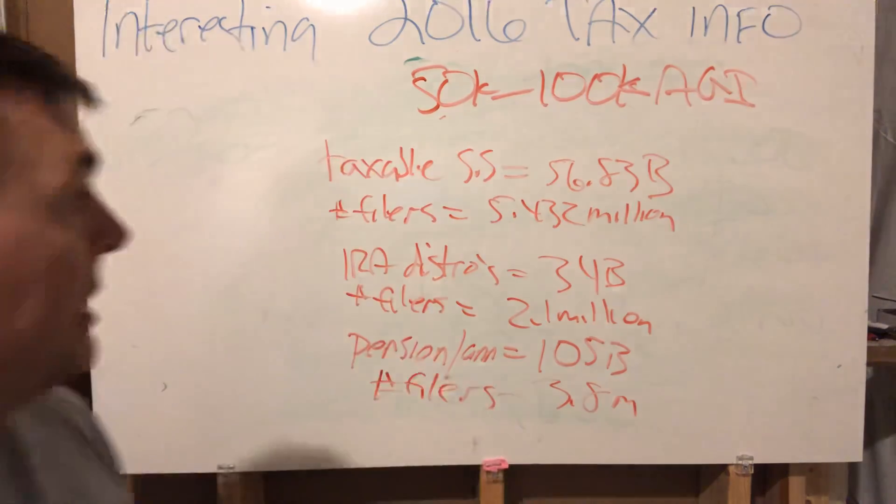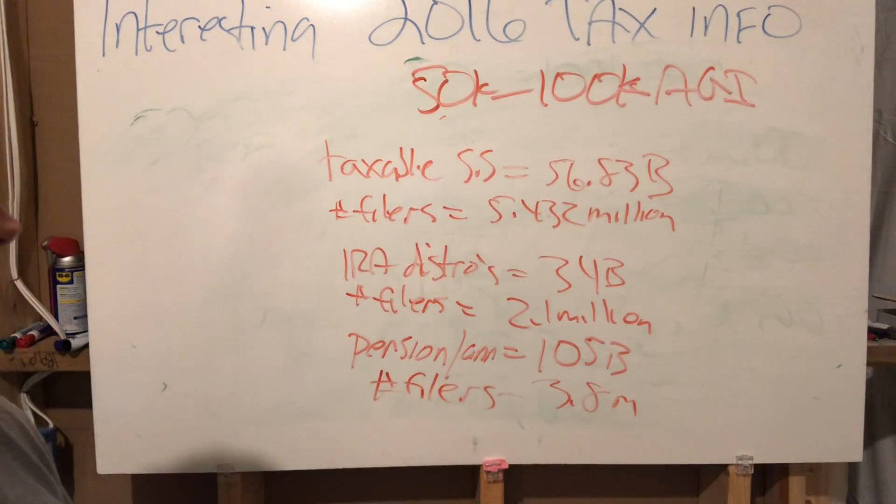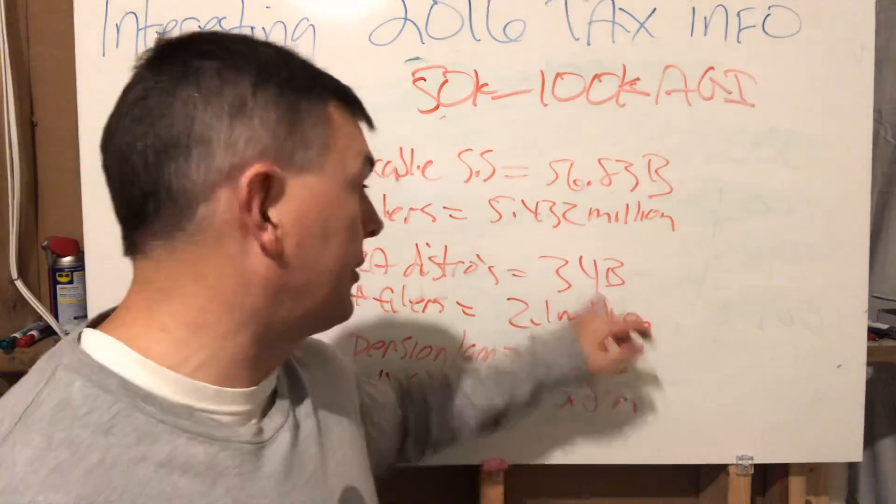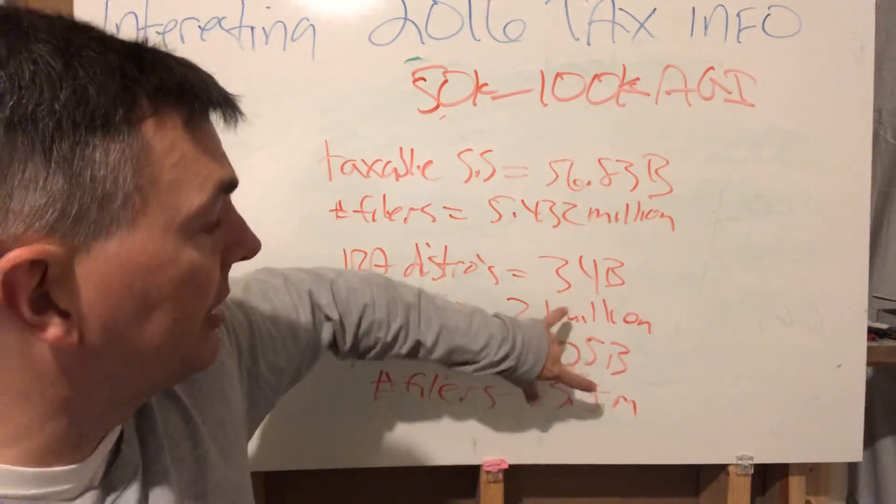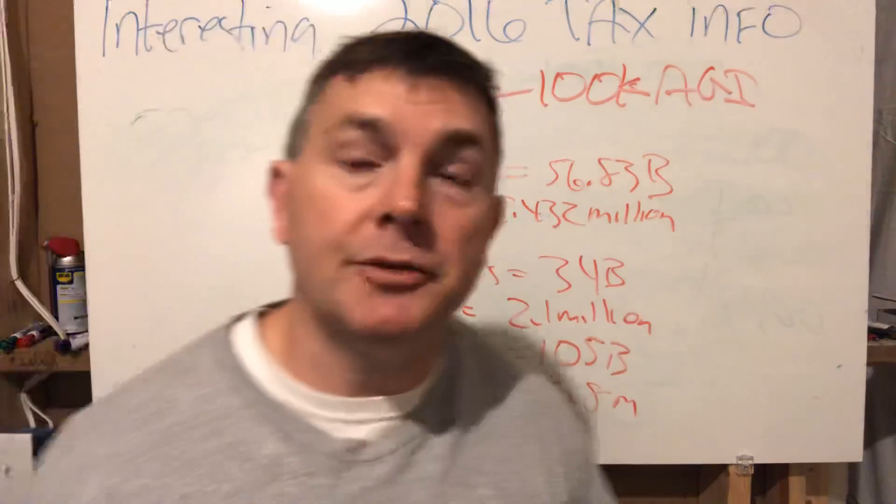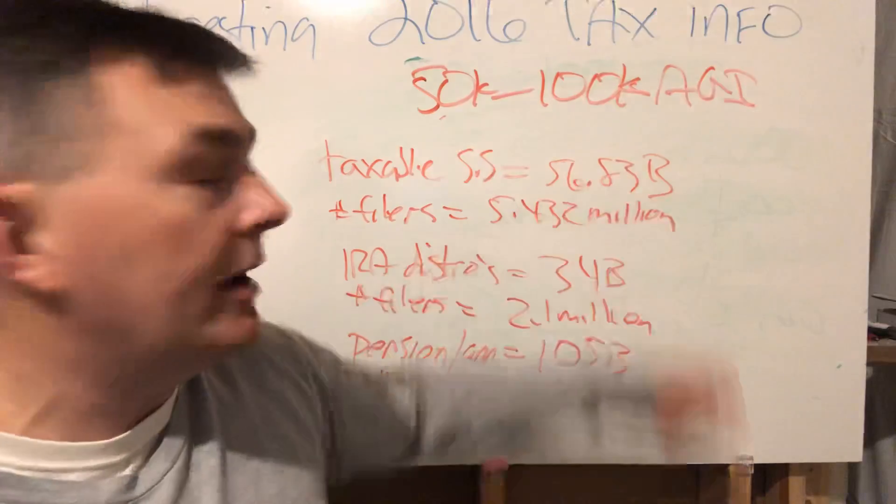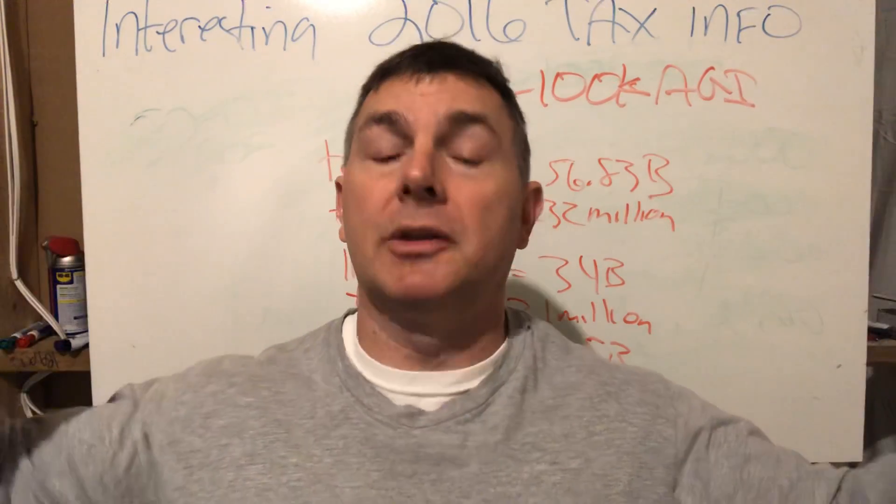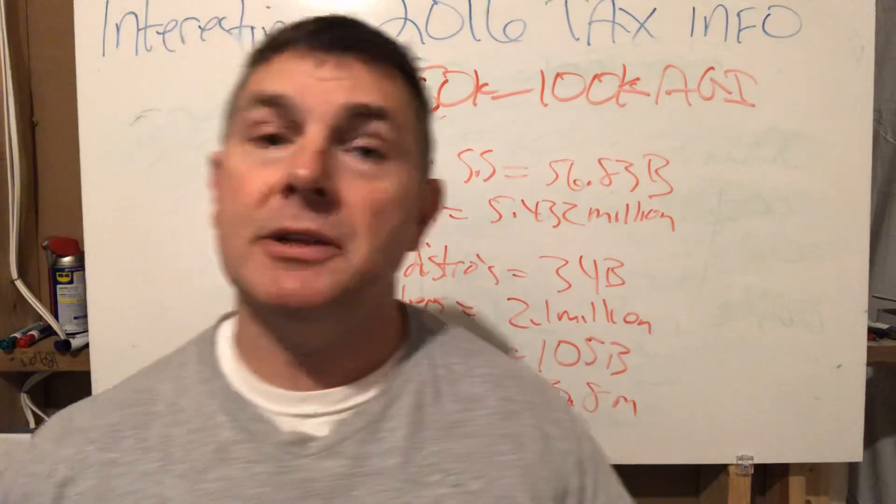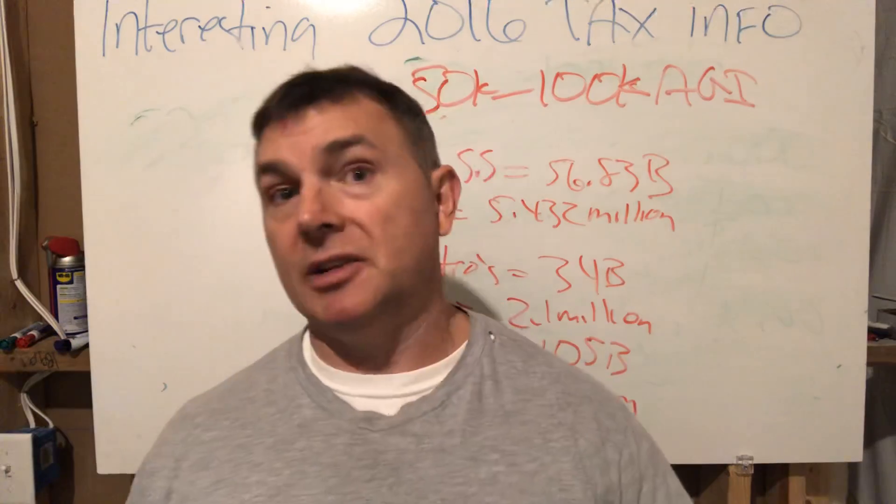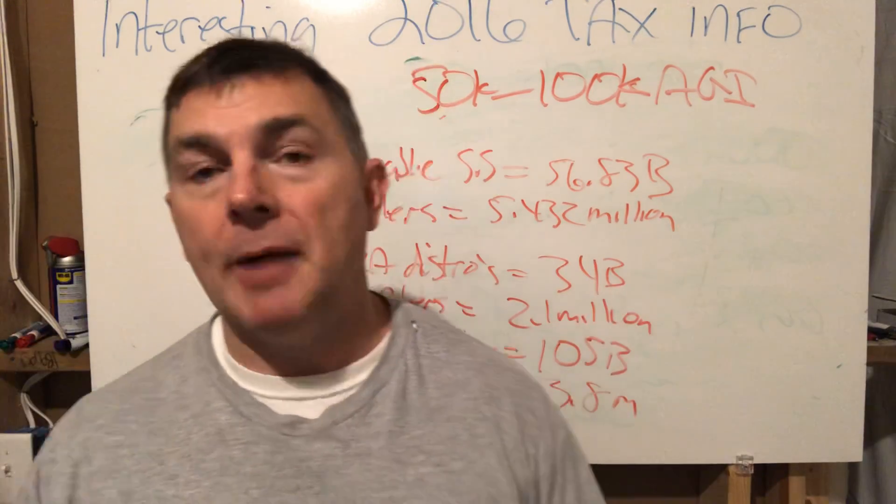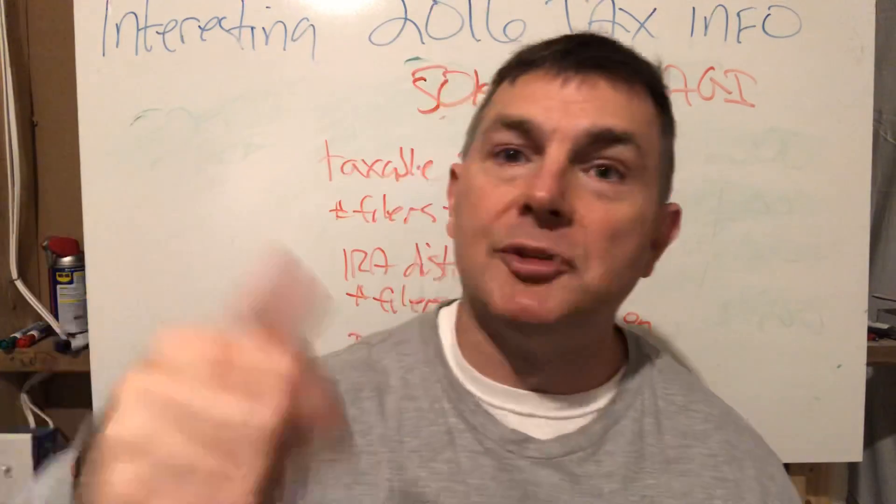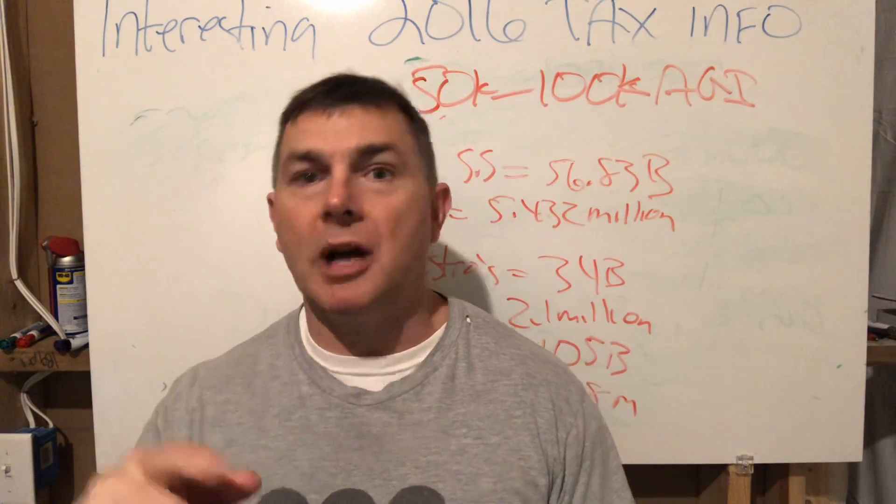Fifty to 100,000 AGI, which is probably the bulk of the people watching this. Taxable social security 56.83 billion, IRA distribution taxable 34 billion and pension distribution 105 billion. These two things make that taxable. If you have IRA distribution taxable and pension distribution taxable, you will have more taxable social security income. Reduce your taxable IRA distributions with Roth IRA conversions at the age of 60 to 62. As always, subscribe, thumbs up, comments. Talk to you next time, thanks guys.